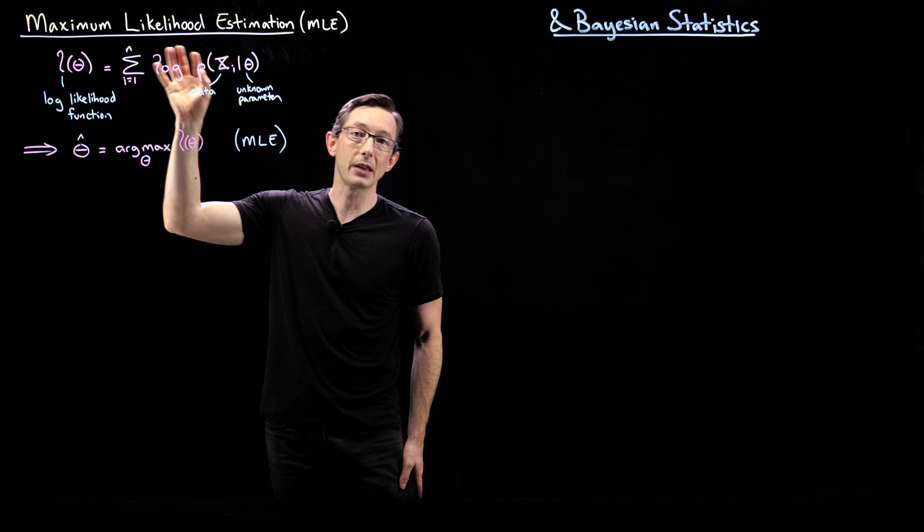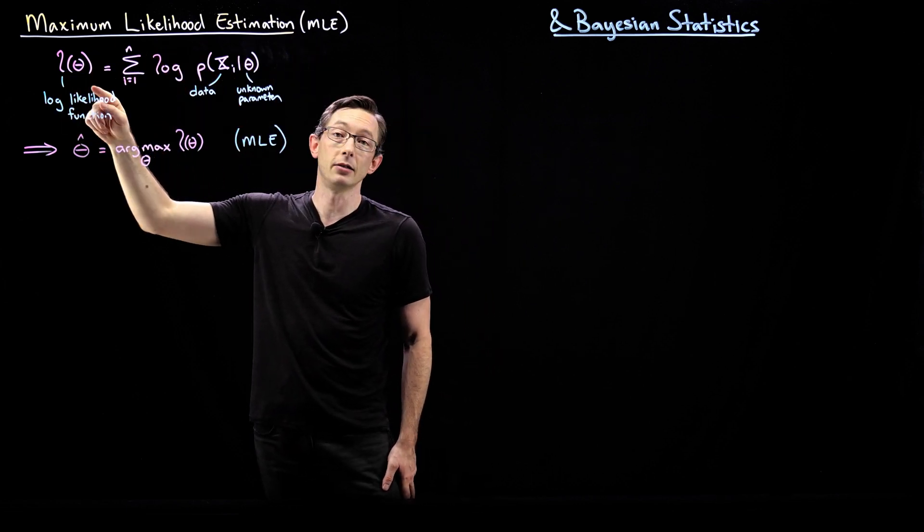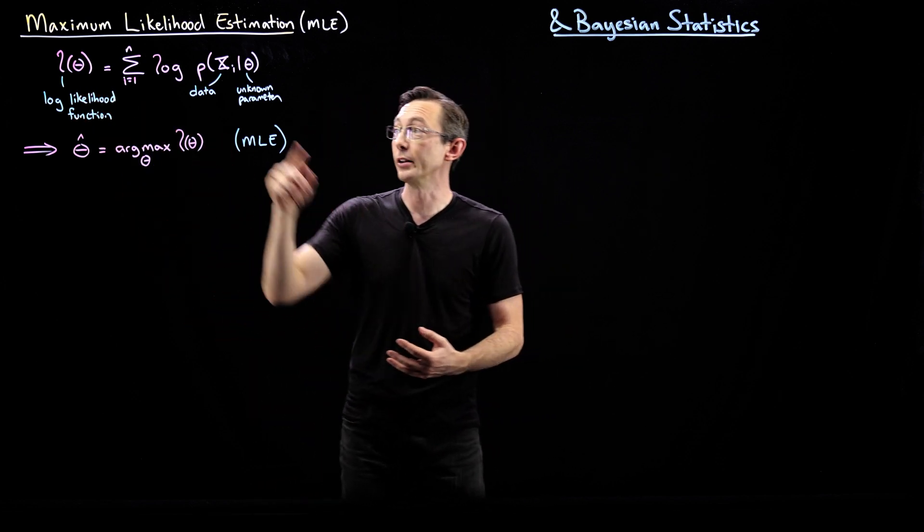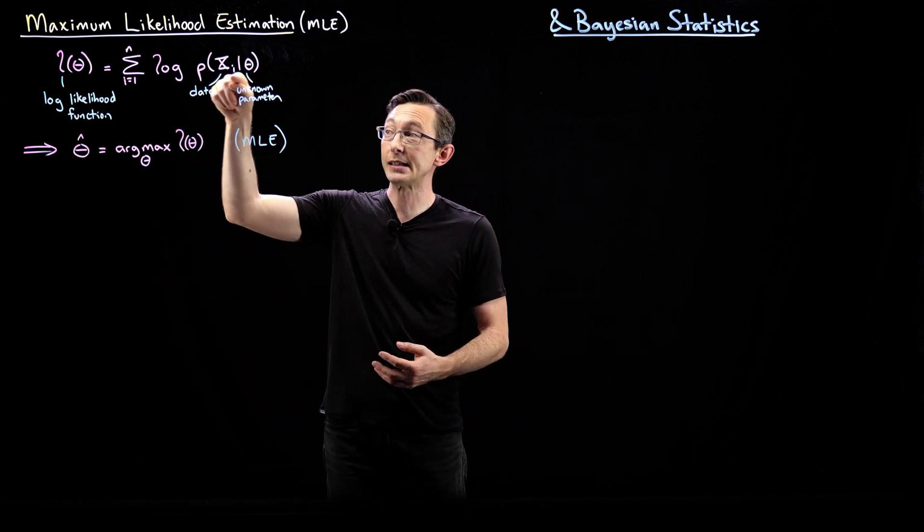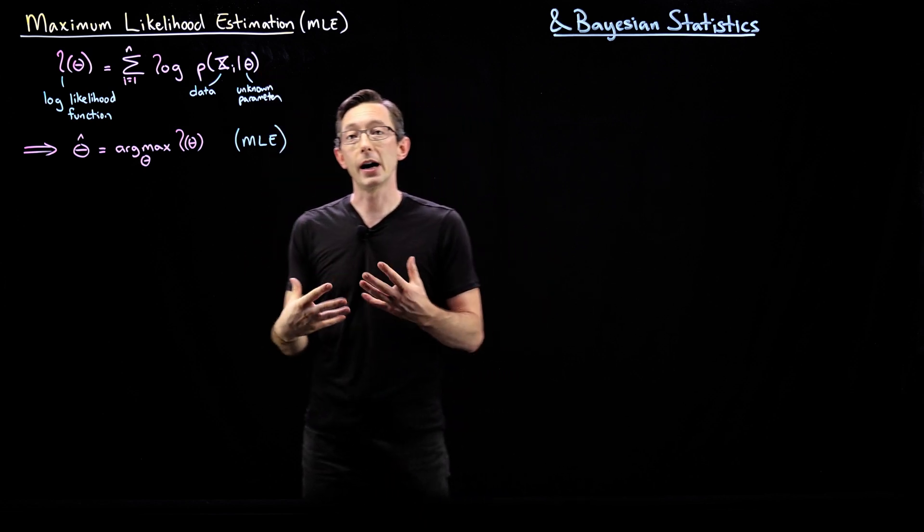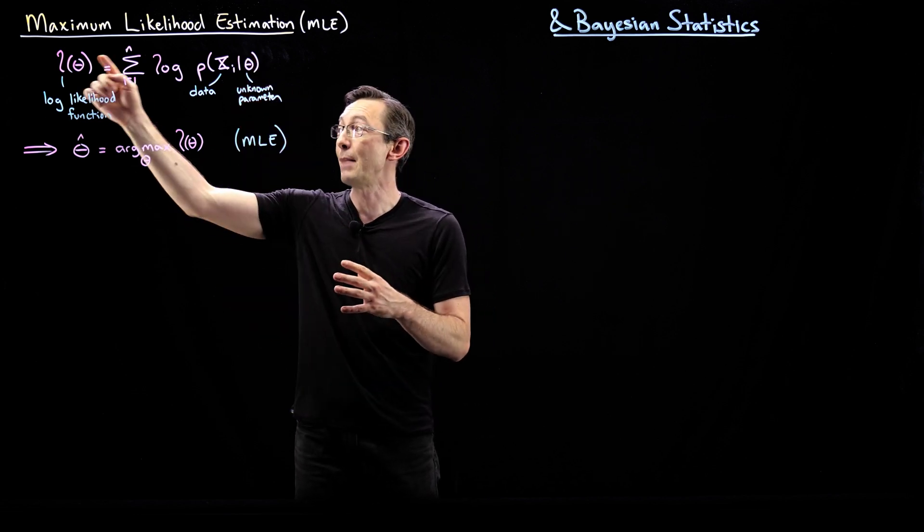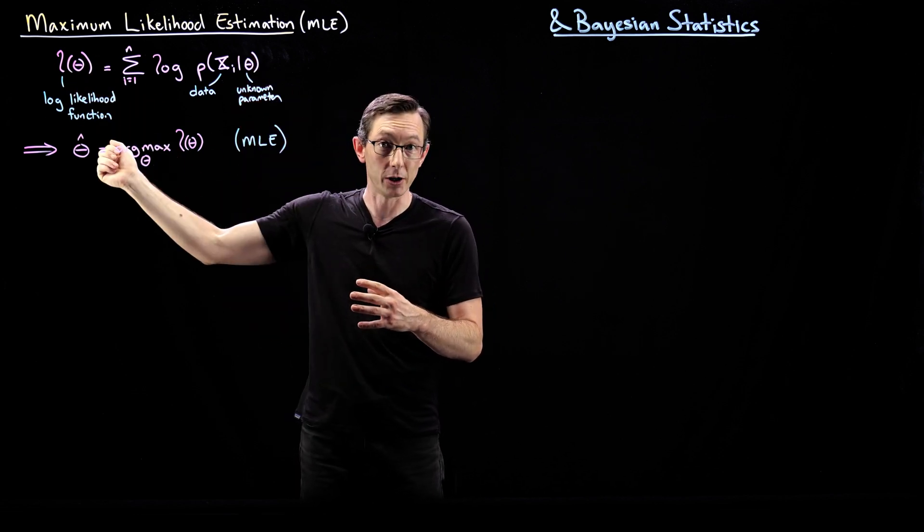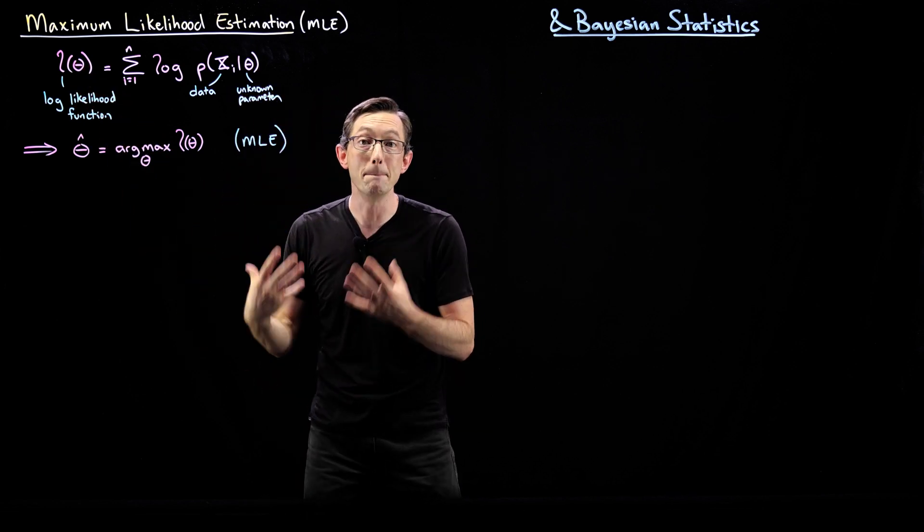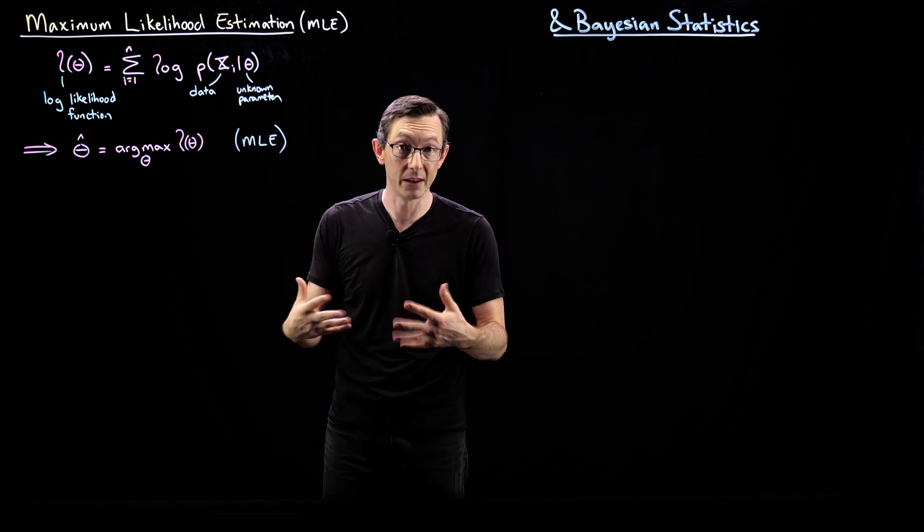If I take the logarithm of that probability density function, I have something called the log likelihood function. This tells me roughly the likelihood of observing this specific data given those specific parameters. What we're trying to do is essentially tweak or optimize these parameters to find the maximum likelihood function. We maximize over all of theta to find the parameters that are most likely or most consistent with the measurement data that we have access to.